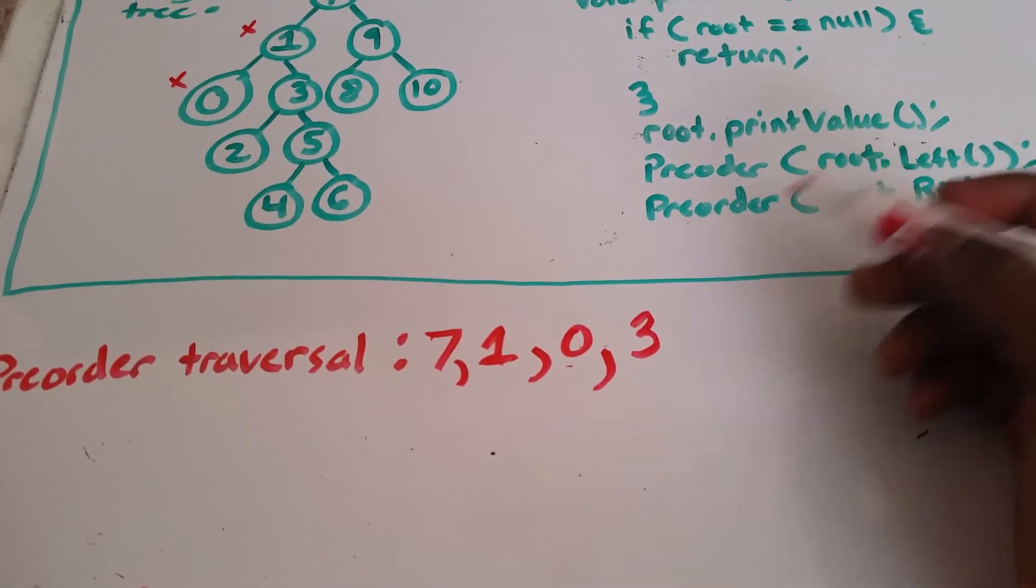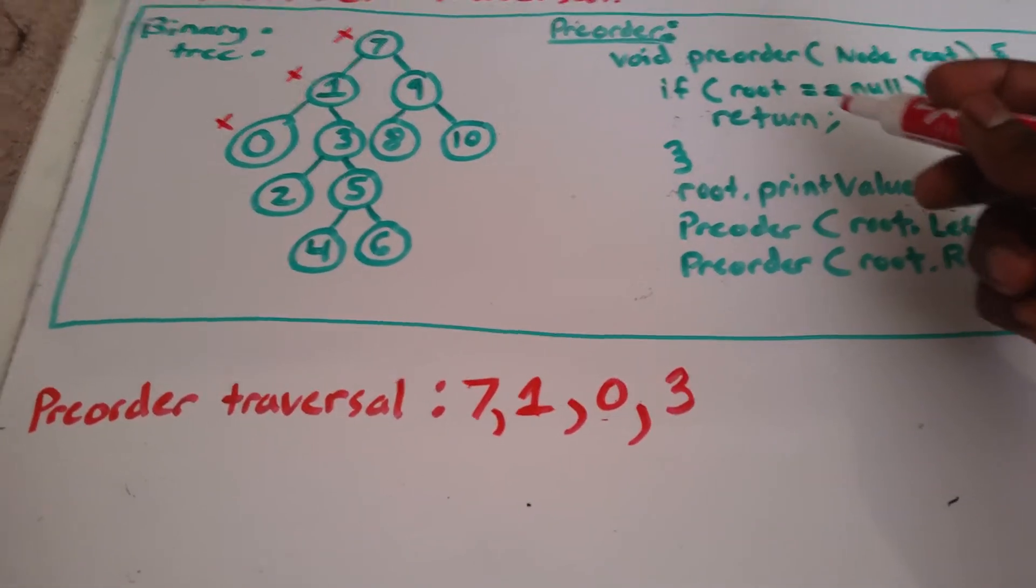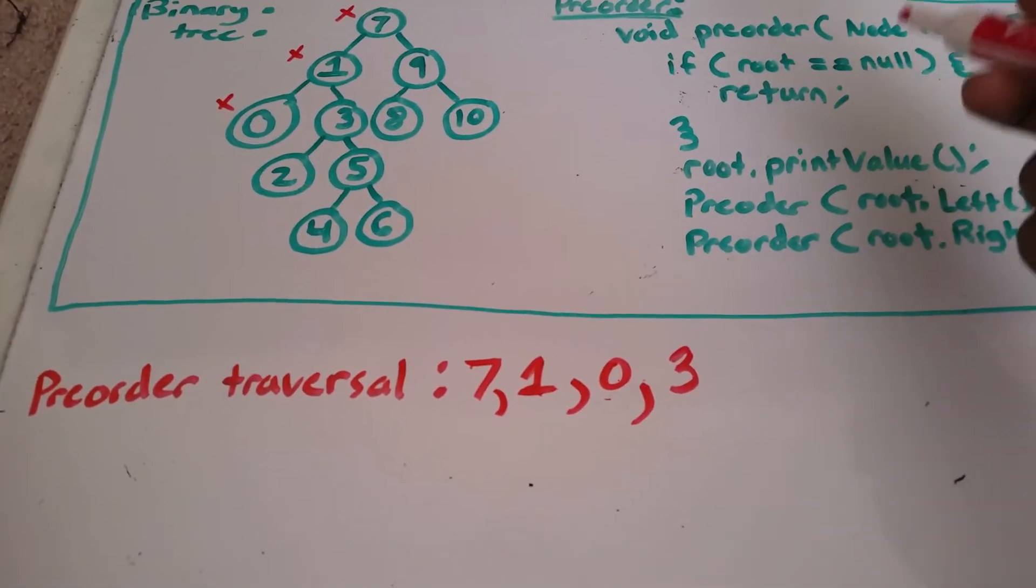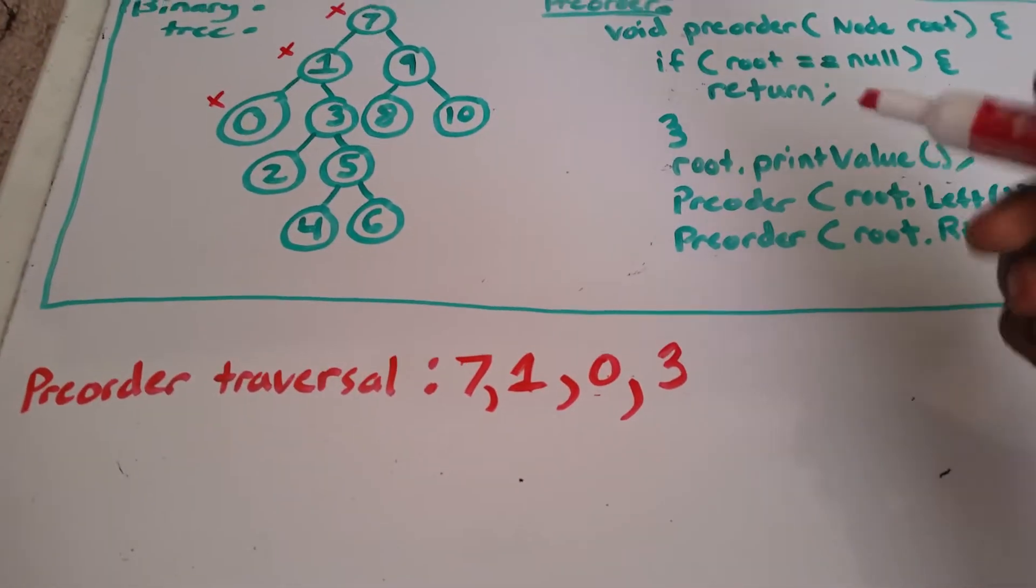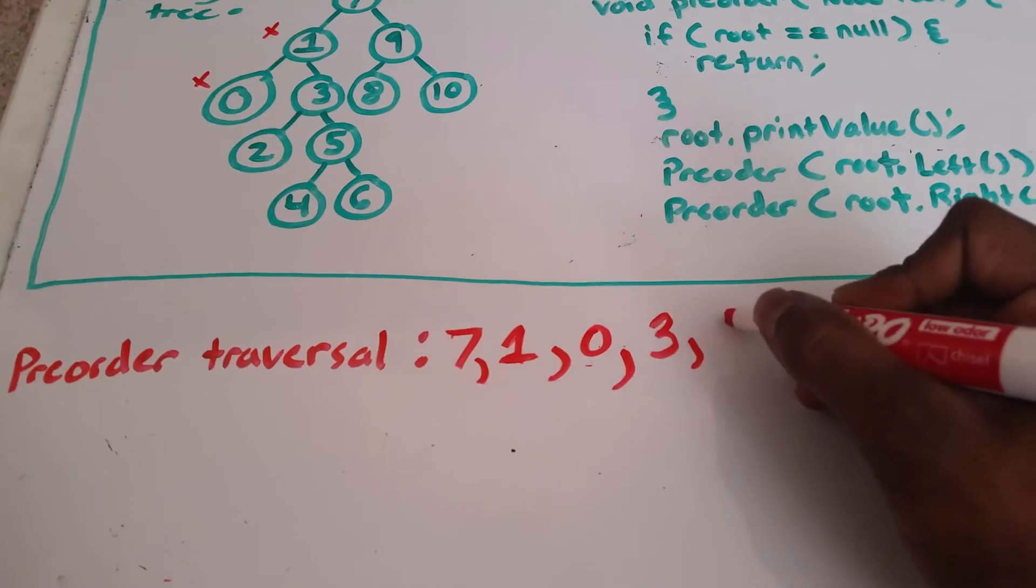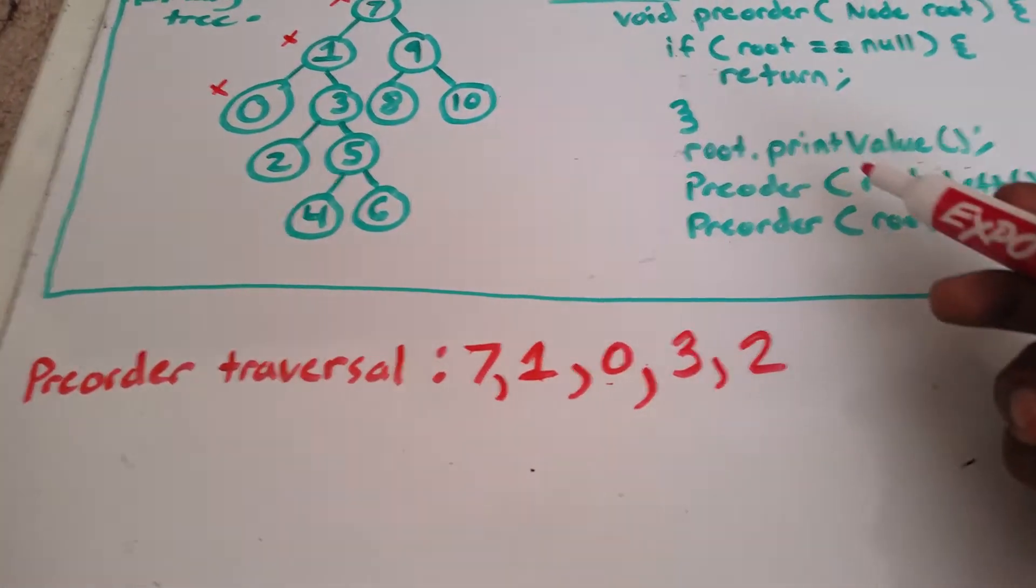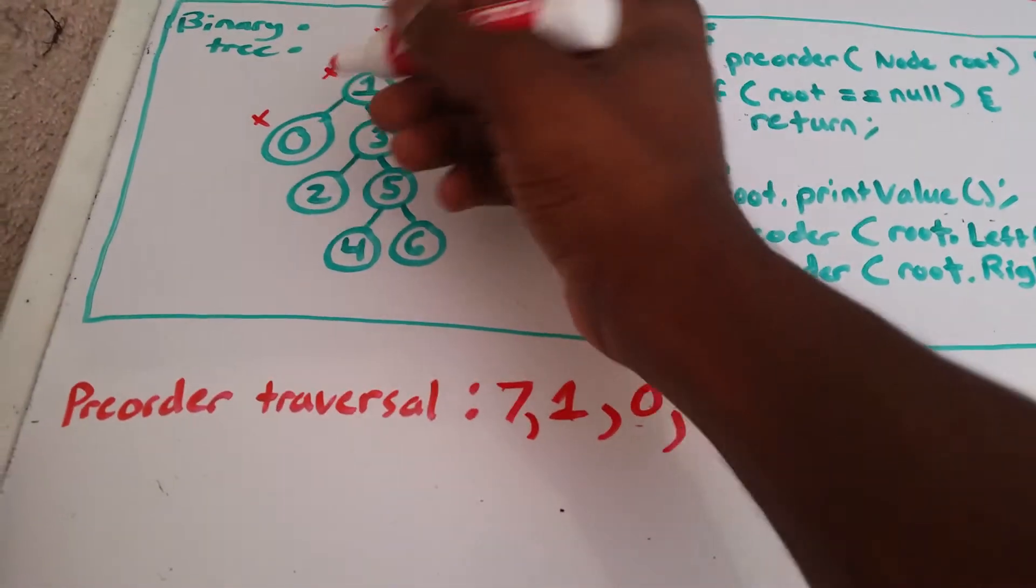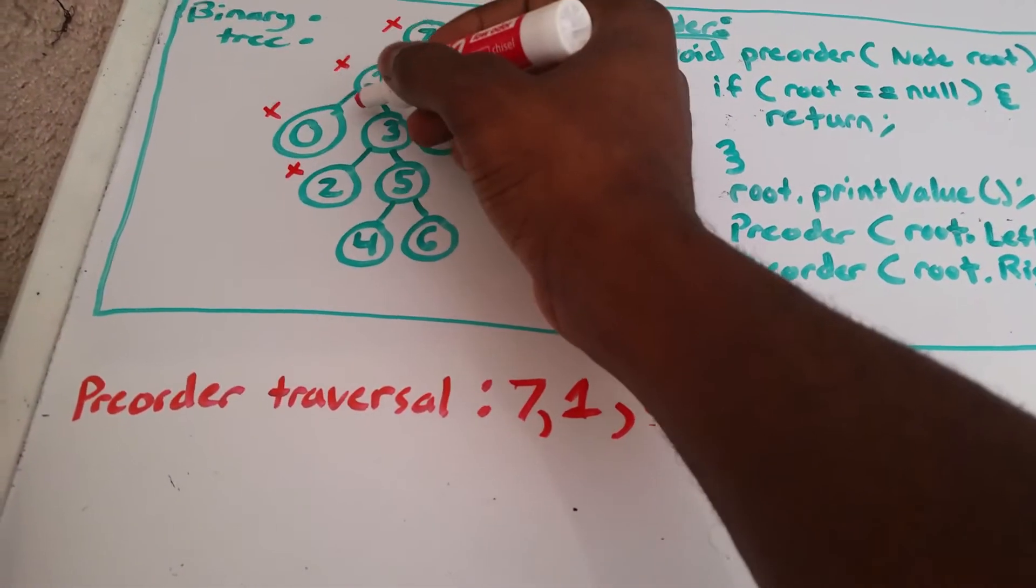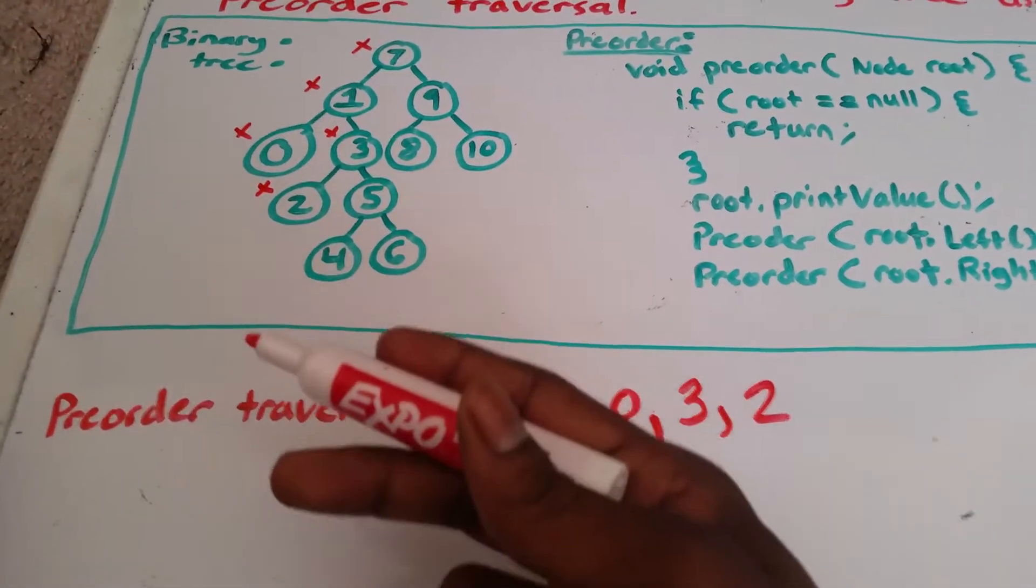Now we're going to go to the left of 3. And to the left of 3 is 2. Is 2 null or empty? No. The node 2 has the value 2. So we go ahead and we print 2. And we go to the left of 2. Nothing's there. So we return back to 2. Since we're going through this, I need to go ahead and mark these all off since we have already visited them and printed the values.